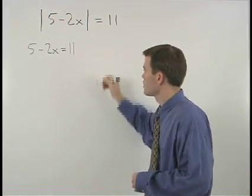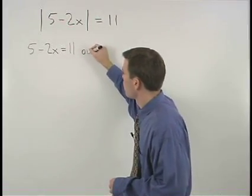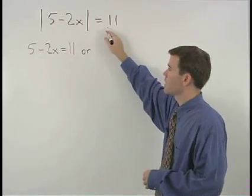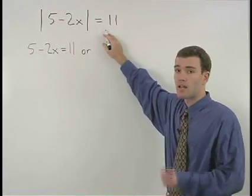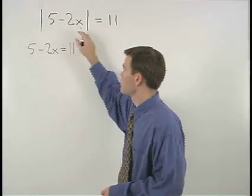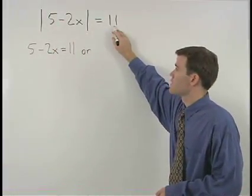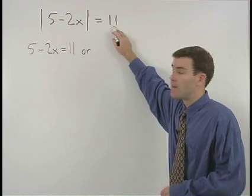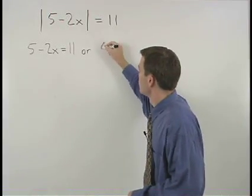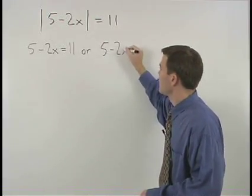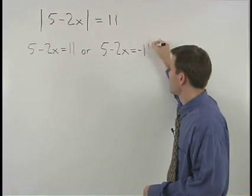Our equations will be separated by the word or, and our second equation will look exactly like the original except for the absolute value signs and we'll change this 11 to a negative 11. So we have 5 minus 2x equals negative 11.